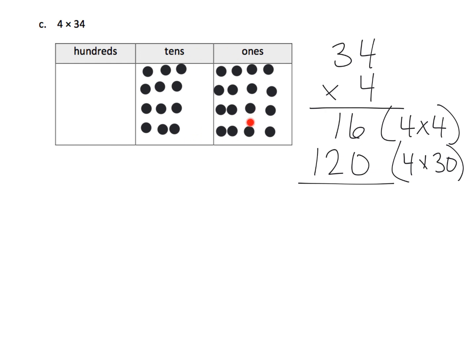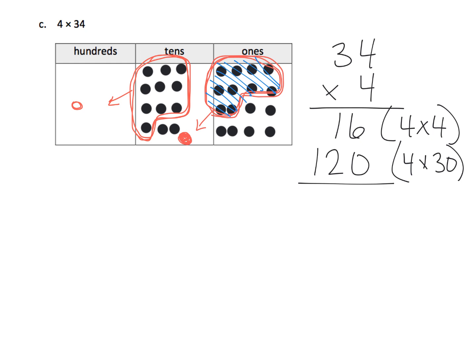Now we're going to do some regrouping. Anytime you have 10 in one column, you can bundle those together. So here are 10 ones — those 10 ones can be bundled together to equal one 10, and they're no longer in the ones column. We can do it again: here are 10 tens, and those 10 tens can be bundled together to equal a hundred. So they're no longer in the tens column. We end up with 1 in the hundreds place, 3 in the tens place, and 6 in the ones place — giving us 136.